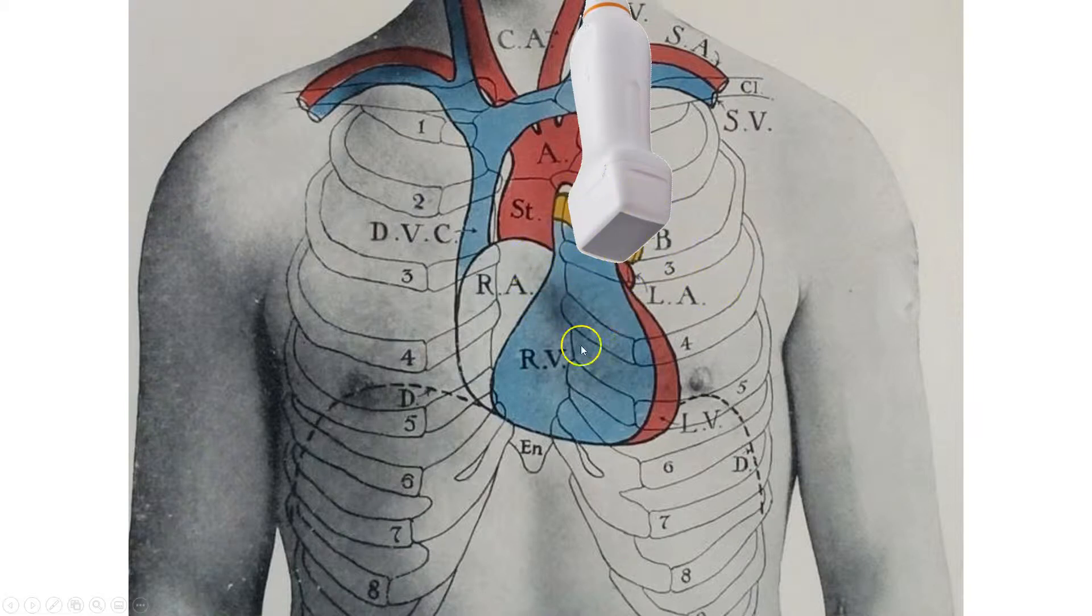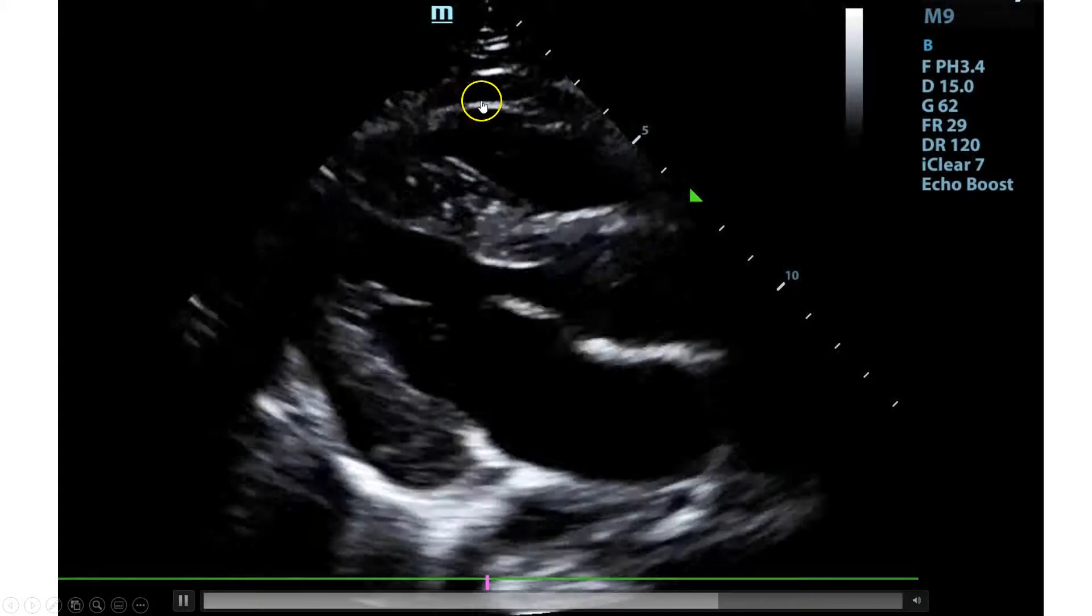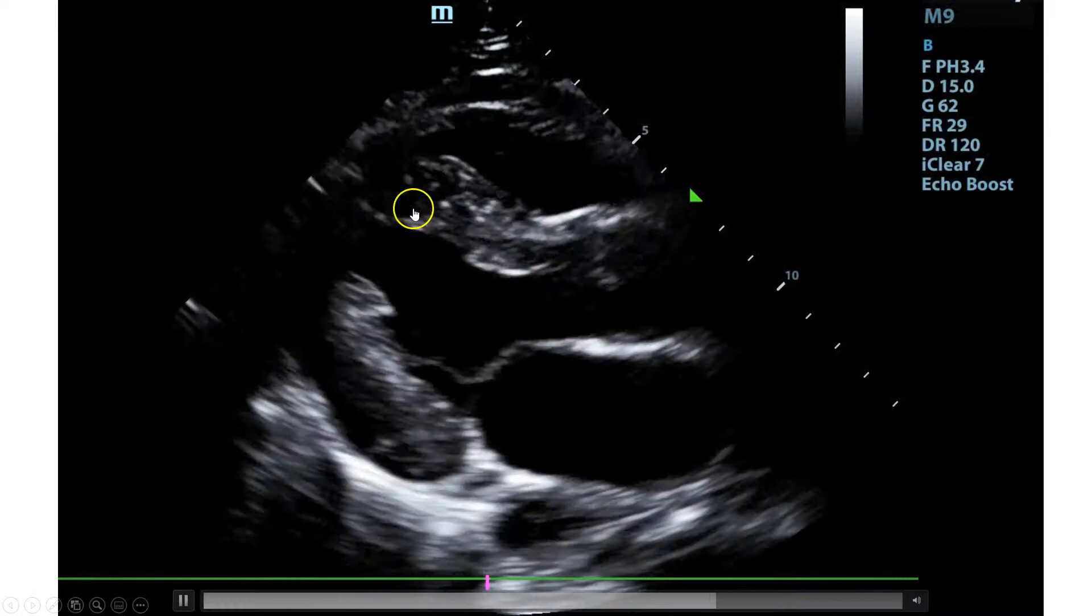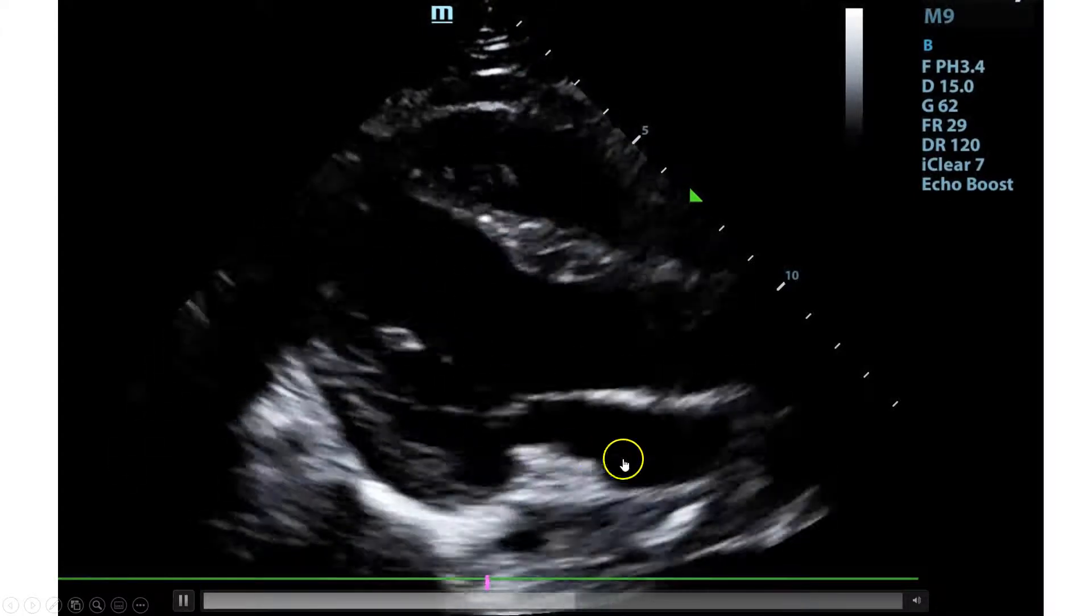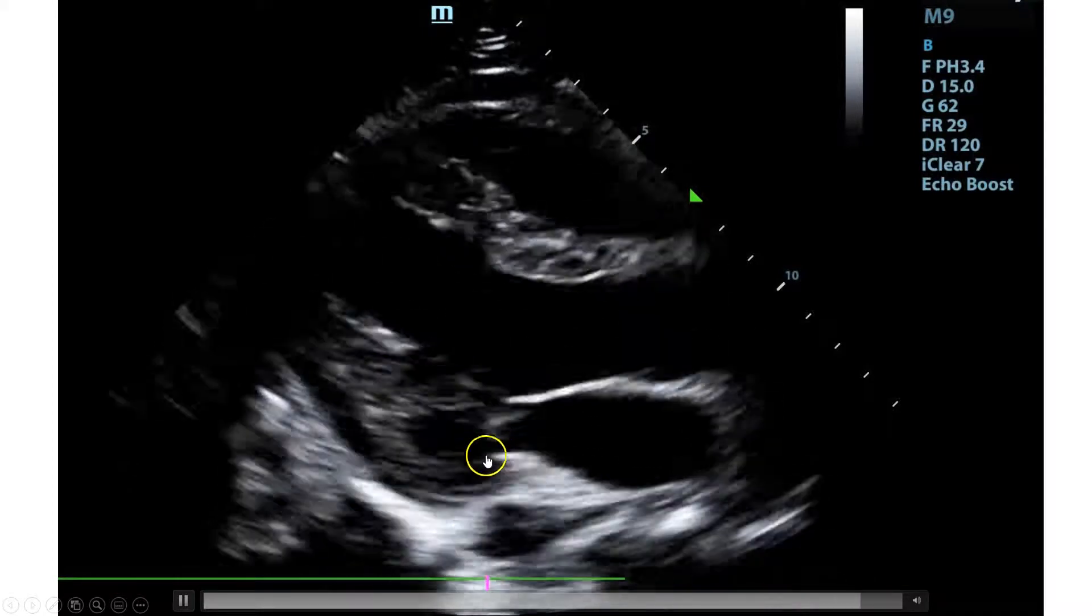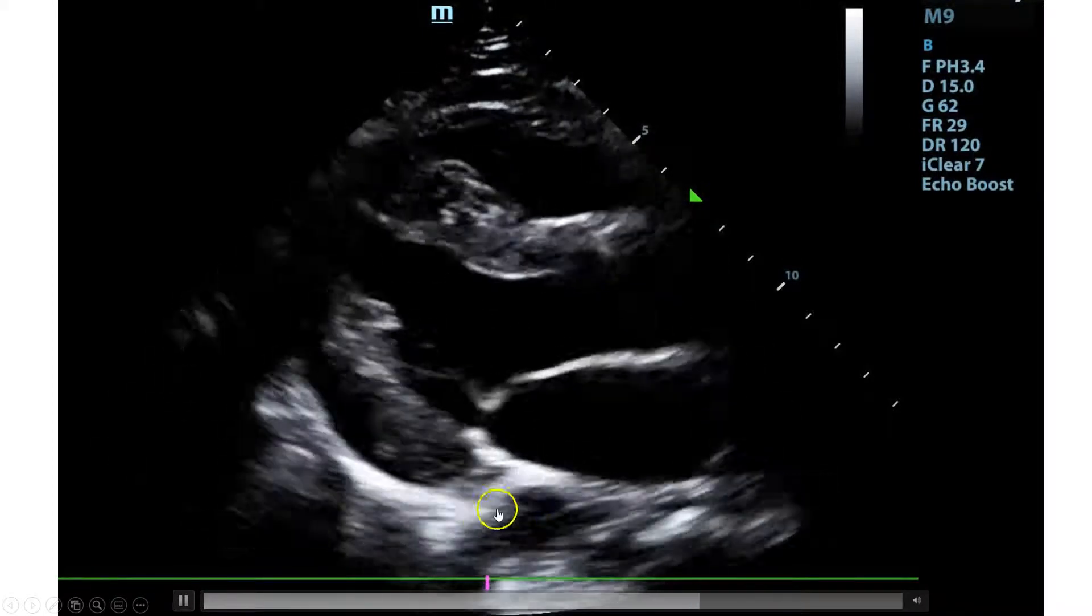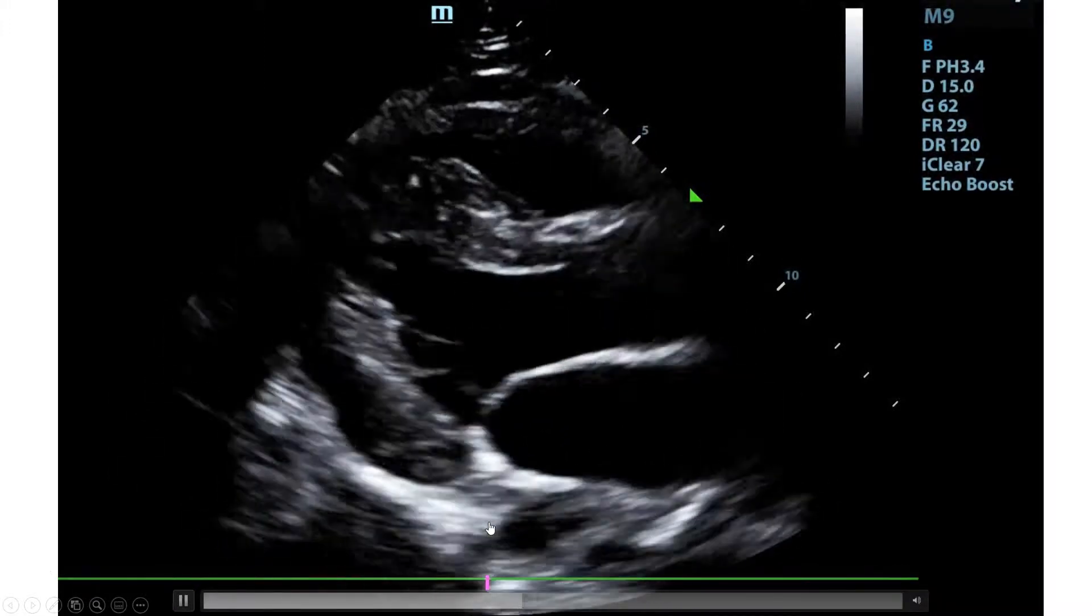That probe marker will be pointed towards the left hip for the parasternal long axis view. And you're going to keep searching those spaces until you see this kind of view. So in this view, what you see here is that's your subcutaneous tissue. There's your right ventricle, which is the most superficial part of the heart. You see the left ventricle there. That's a papillary muscle. You see the left atrium. You see the mitral valve. You see the aortic outflow tract right there. And you see the descending thoracic aorta.